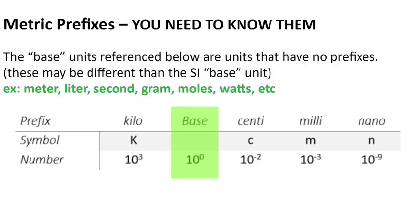Let's go ahead and start by looking at these metric prefixes. You need to know these specific four metric prefixes. Before we start talking about those prefixes specifically, I want to clarify — we talked about base units last class as units that we can directly measure instead of derived units. These base units are actually a little bit different. Here a base unit is a unit that has no prefix on it, like meter instead of centimeter or kilometer, or grams instead of kilograms or centigrams or nanograms.